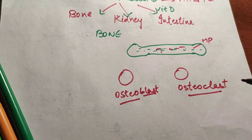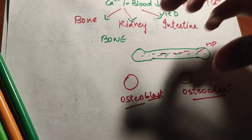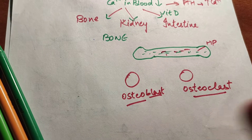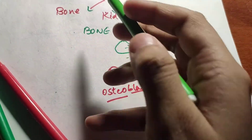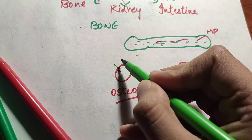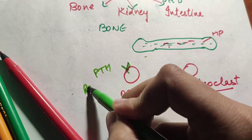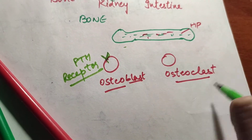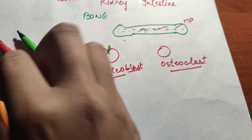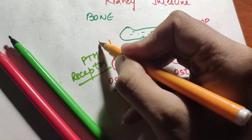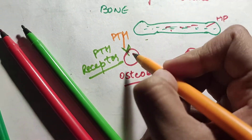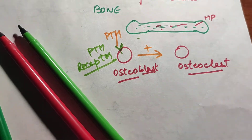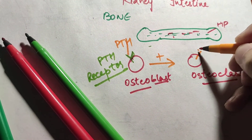There are also cells known as osteoclasts, which are bone-destroying cells that cause bone resorption — taking out the mineralized elements from the bone. Importantly, osteoblasts have the PTH receptors, not the osteoclasts. So PTH comes and binds with the osteoblasts.